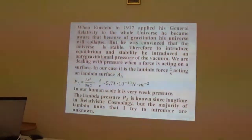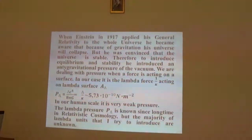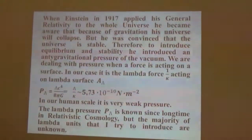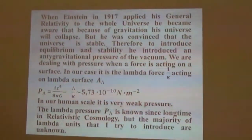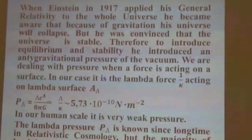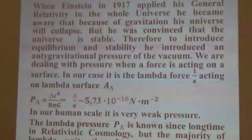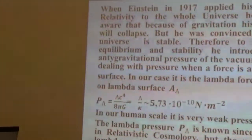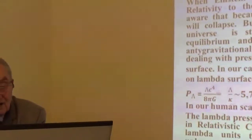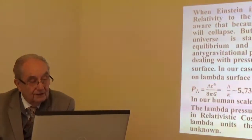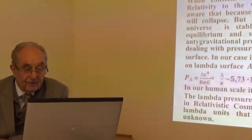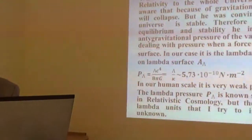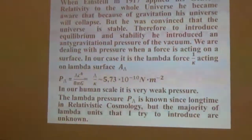When Einstein applied his general relativity to the whole universe he became aware that because of gravitation his universe would collapse, but he was convinced that the universe is stable. Therefore, to introduce equilibrium and stability, he introduced an anti-gravitational pressure of the vacuum. We are dealing with pressure when a force is acting on a surface — in our case it is the lambda force acting on the lambda surface.